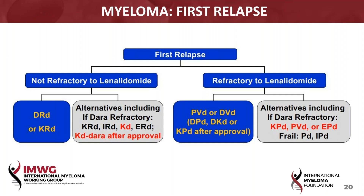I think the natural killer cell activity is the key. In the ELO-POM-DEX platform, which is FDA approved, there is a relatively dexamethasone-sparing approach. This may be very important because the Eloquent upfront study — Eloquent 1 — showed no significant difference between the two arms, ELO-RD versus RD. One of the issues there will be the dexamethasone dosing, as well as the fact that pomalidomide has much more NK-cell activity clinically than lenalidomide, although both do it, but POM to a great extent.